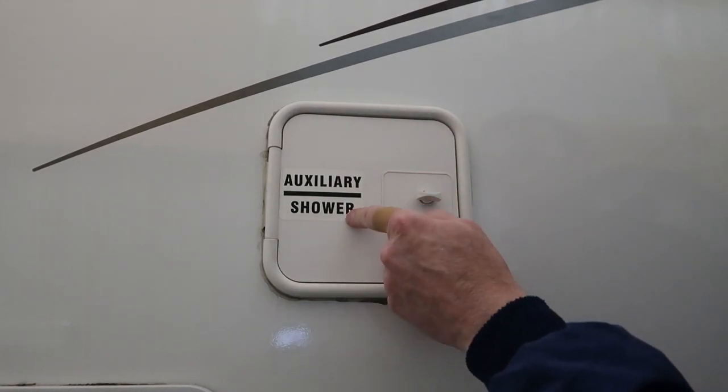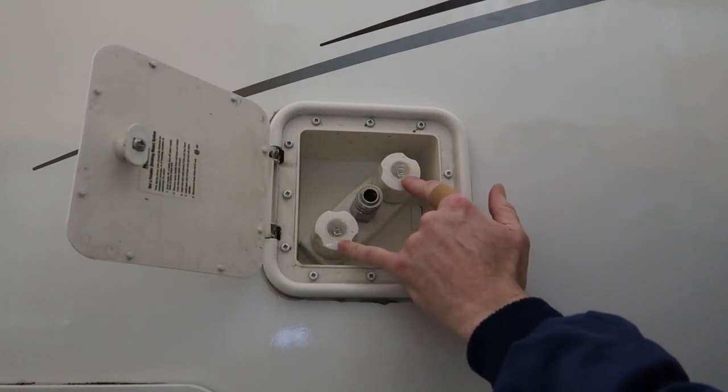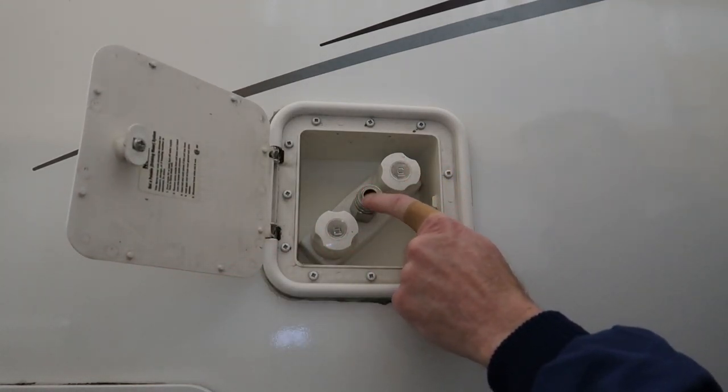This is the outside shower enclosure. So we open up this little door and we've got two faucets and a little quick disconnect. Arctic Fox and some other camper manufacturers commonly use this for their outside shower connection.